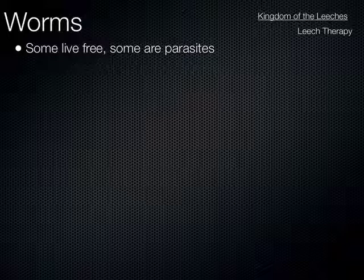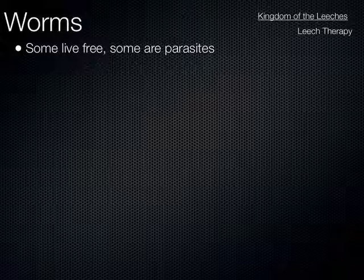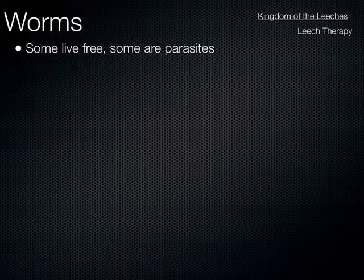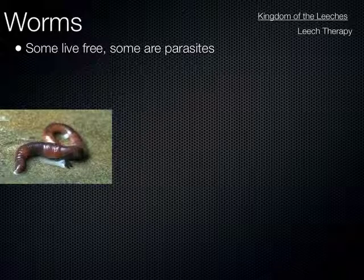Now let's move on to worms — that's another one. There are actually three main phyla of worms: nematodes, which are roundworms; Platyhelminthes, which are flatworms; and Annelida, which are segmented worms. Most have two body openings — food goes in one end and waste comes out the other. That's another step up in terms of evolution and body plan. This includes things like earthworms, which are segmented worms — you can see each of those little segments on its body.